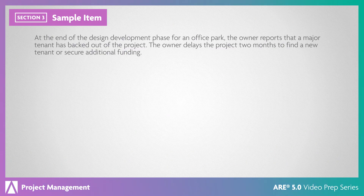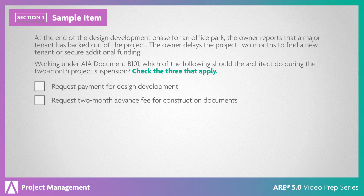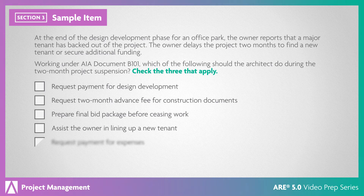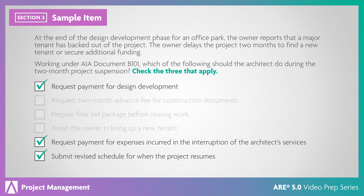At the end of the design development phase for an office park, the owner reports that a major tenant has backed out of the project. The owner delays the project two months to find a new tenant or secure additional funding. Working under AIA Document B-101, which of the following should the architect do during the two-month project suspension? Check the three that apply: request payment for design development; request two-month advance fee for construction documents; prepare final bid package before ceasing work; assist the owner in lining up a new tenant; request payment for expenses incurred in the interruption of the architect's services; submit revised schedule for when the project resumes. These are the correct answers.